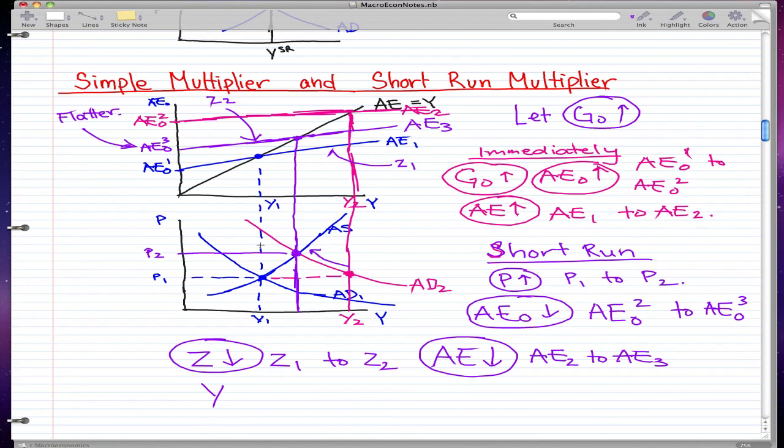And so then over the short run, it actually fixed itself, increases the price, some people have less demand. And so we have a new output, which is Y₃. So Y also falls from Y₂ to Y₃.